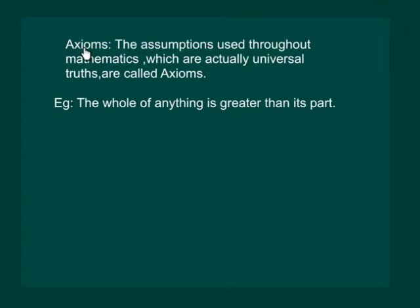The assumptions used throughout mathematics which are actually universal truths are called axioms. For example, the whole of anything is greater than its part. We know that it is a universal truth. This part of the circle is smaller than the whole circle.